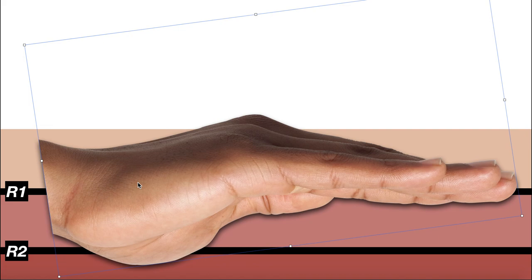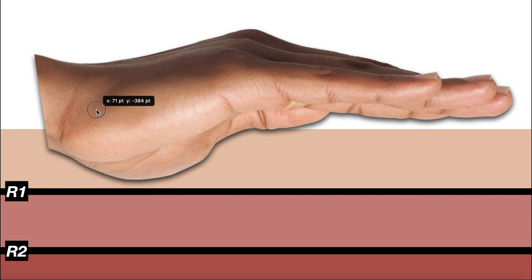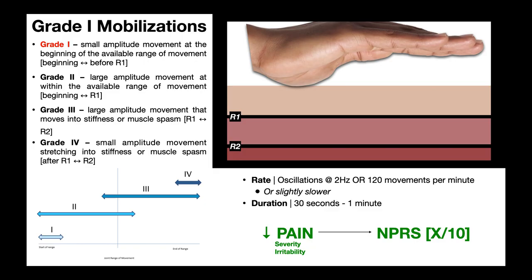Knowing the exact R1s and R2s really just takes a lot of practice doing this on different people. Now we're about to get into the Maitland classification — the grades of mobilizations. These different grades are going to oscillate around different resistances: some are going to hang out more around R1 and lighter, and some are going to be between R1 and R2.